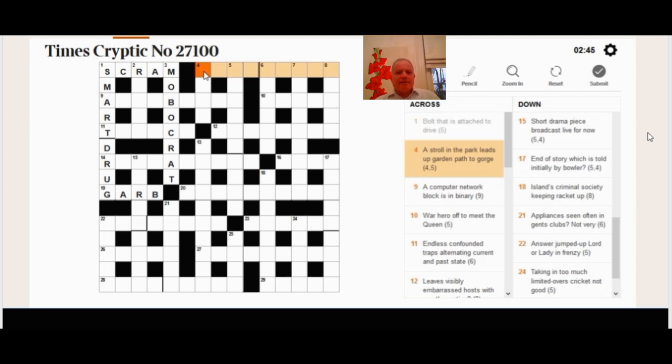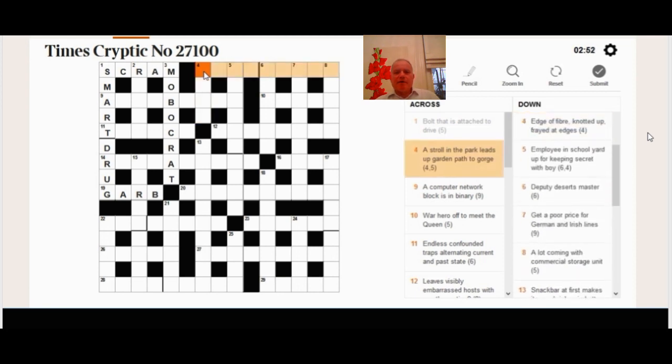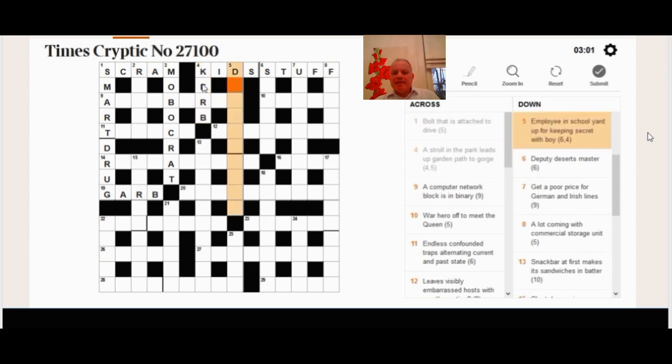Again and again these definitions are fantastically disguised. Here at 4 across, a stroll in the park leads up garden path to gorge. The definition is a stroll in the park, so you have to come up with a synonym for something easy. Piece of cake. I eventually thought of kids stuff. And even leads up garden path, you're not expecting that to mean fools or kids as it does here. Fantastic wording of the clue to completely confuse you.